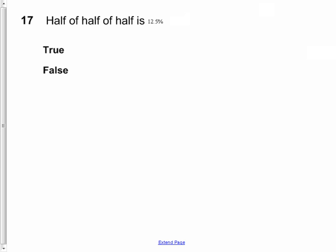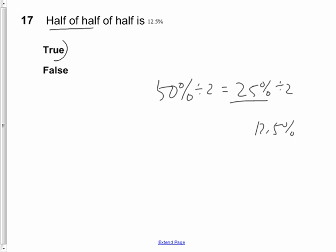Question 18: Half of half of half is 12.5%. Remember half of half, well there is half, so half of half is half of this, so I'm going to divide that by 2. Half of half of half. Half of half is 25%, and half of half of half is 12.5%, which is half of that, which makes it true. It's true.